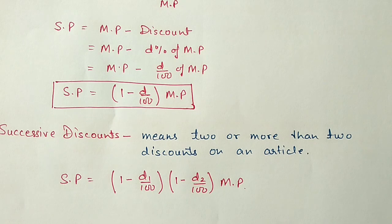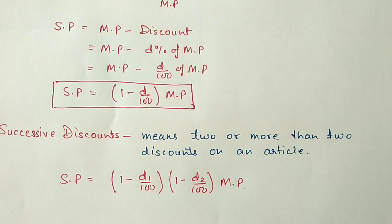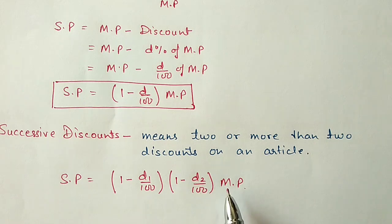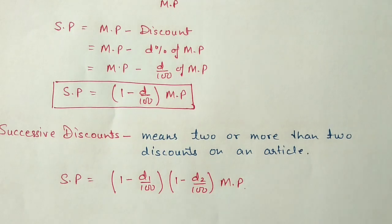Next is successive discount. Successive discount means when two or more discounts are given on an article. For example, on a 100-rupee item, a 10% discount gives 90 rupees, then another 10% discount on 90 gives 9 rupees off. The formula for successive discounts is: SP = (1 − D1/100)(1 − D2/100) × MP. For three discounts, add one more bracket: (1 − D3/100).